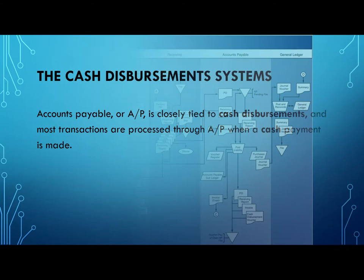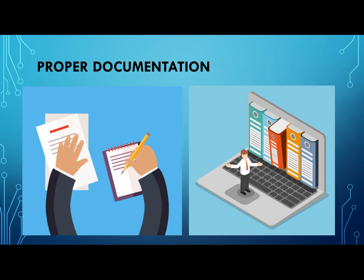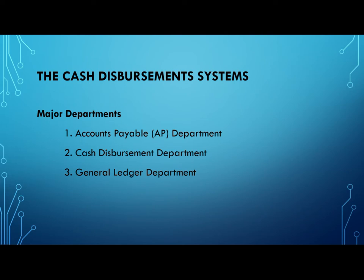The second component in physical system is the cash disbursement system. Every small business needs this system to efficiently and securely handle cash payments. Accounts payable is closely tied to cash disbursements, and most transactions are processed through AP when a cash payment is made. Proper documentation is very important and all cash disbursements must be recorded under the company's financial records. The cash disbursement system has three major departments: the accounts payable department, the cash disbursement department, and the general ledger department.